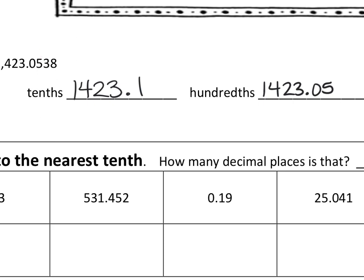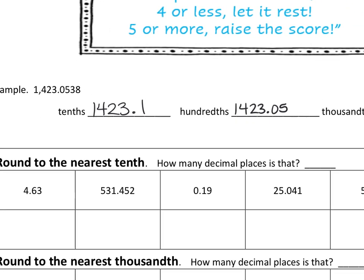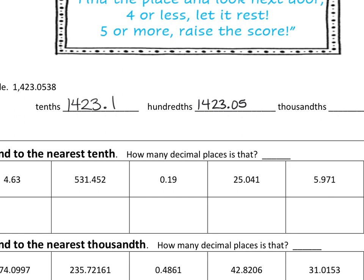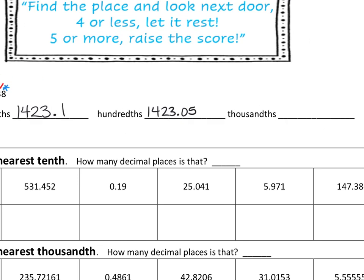I'm going to zoom out slightly to get to this last one. For the thousandths — if we want to round to the thousandths, that means we want to keep three decimals, so we look next door. Is that number eight five or more? Yes. So we're going to raise that one's score. So that should round to 1,423.054.